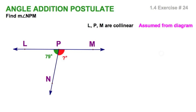And we may remember L, P, and M are collinear. This is one of the few things we can assume from a diagram. And from that, all these other facts follow. So, LPM is therefore a straight angle, and its measure is 180 degrees.